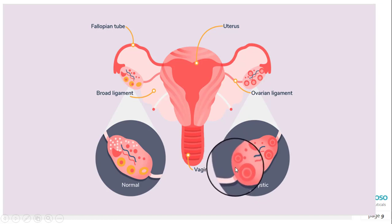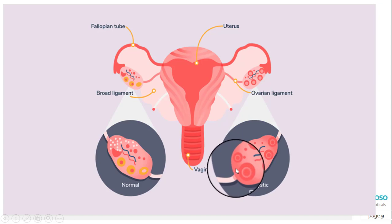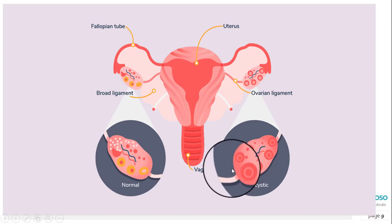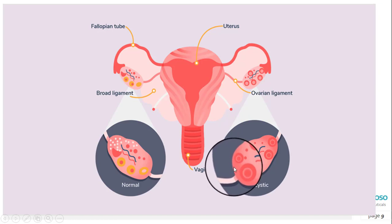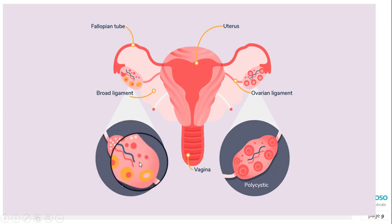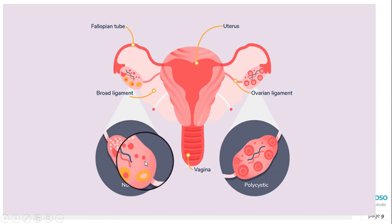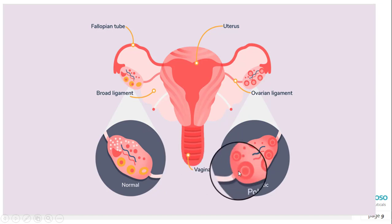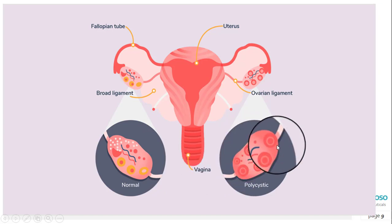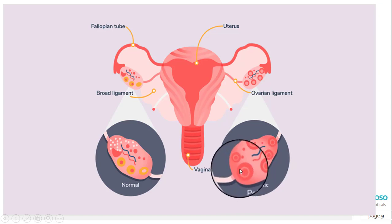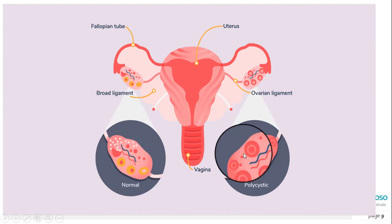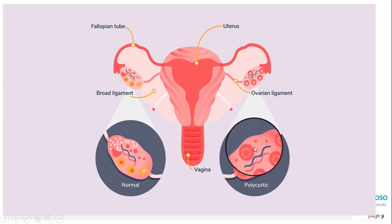The ovaries also produce a small amount of male hormones called androgens. The ovaries release eggs to be fertilized by sperm; the release of an egg each month is called ovulation. FSH and LH control ovulation — FSH stimulates the ovary to produce a follicle containing an egg, and LH triggers the ovary to release a mature egg. PCOS is a syndrome, meaning a group of symptoms that affects the ovaries and ovulation.